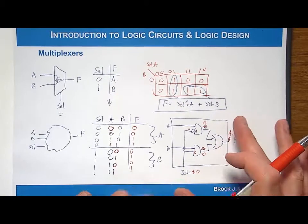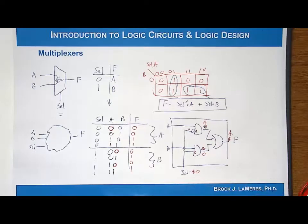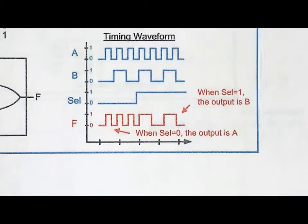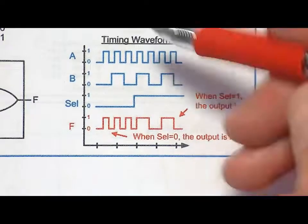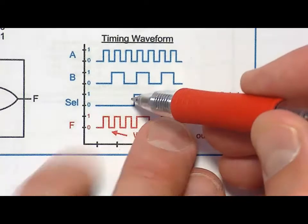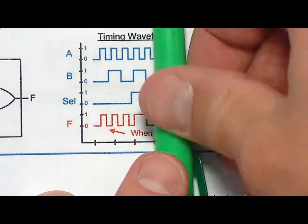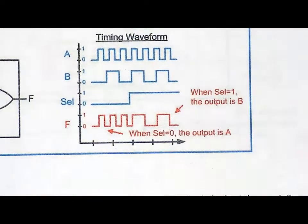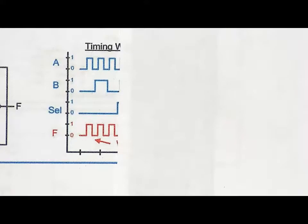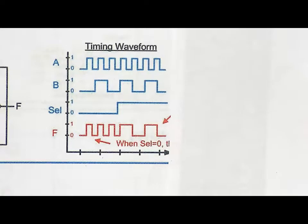That's the multiplexer. Looking at a timing waveform, if A is a fast-frequency signal and B is a slower frequency signal, then when select is 0 you pass A to the output and it mirrors A exactly. When select goes to 1, the output changes and mirrors B. That's the behavior of the multiplexer.